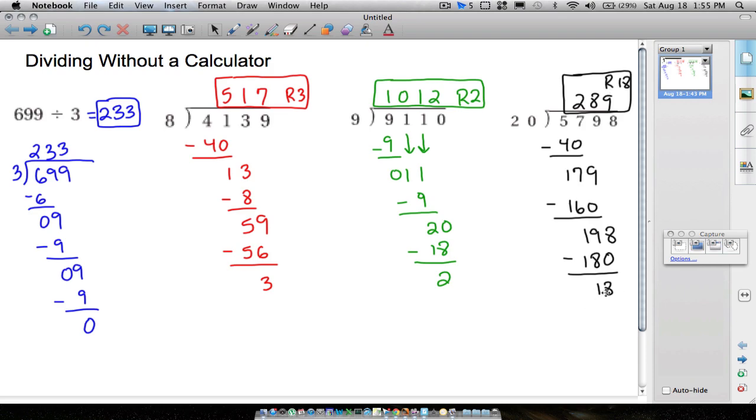Or our remainder of 18. You always want your remainders. Remainder of 18, remainder of 2, remainder of 3. You want these remainders to be smaller than the number you're dividing by. And I'll point those out in class too, because that does oftentimes happen, because your times tables might be a little weak on those, and you might not exactly multiply by enough to take care of that. But anyway, four examples without a calculator. And I hope that helped.